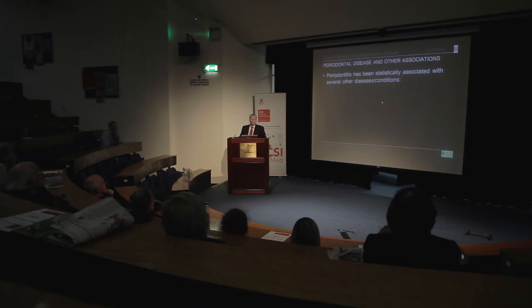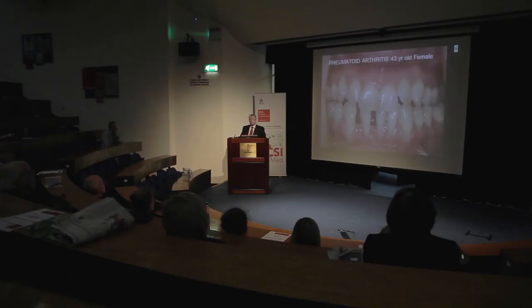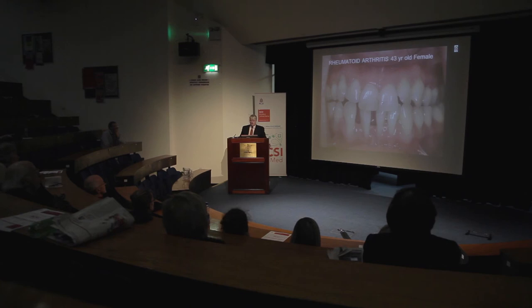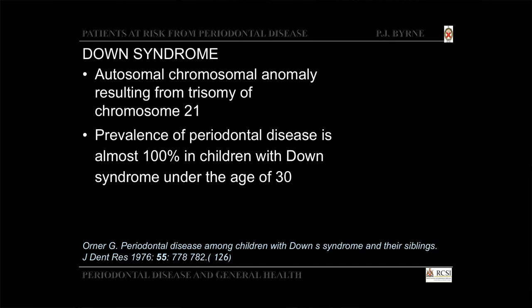Periodontitis has been associated with other diseases and conditions including rheumatoid arthritis, which has also been linked to certain viruses, and a variety of renal diseases associated with CMV and other viruses, as well as premature death from neoplasms and from vascular and digestive disease, which can have herpes viral etiology. Here's a patient — 43 years old — with arthritis and severe periodontal disease; you can see the extent of the disease, effectively 'getting long in the tooth.'